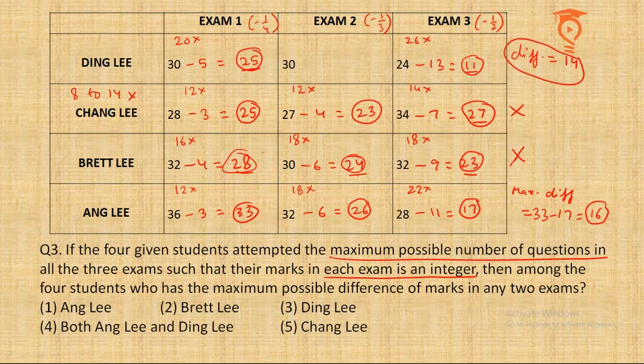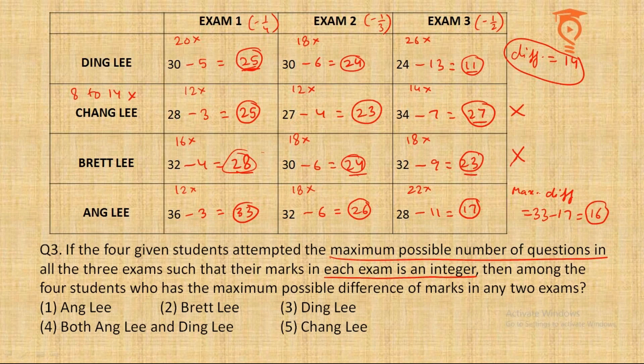For Dingley's Exam 2, even taking 18 wrong gives a subtraction of 6, score 24. The maximum difference for Dingley stays below 16. It is clearly Angley with a maximum difference of 16 — that's the first option. This completes the set.